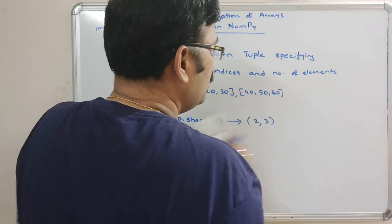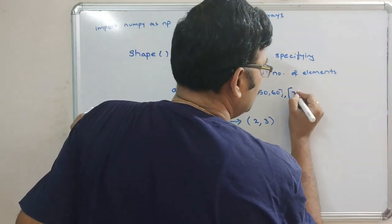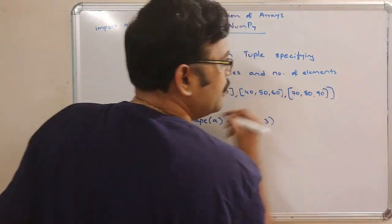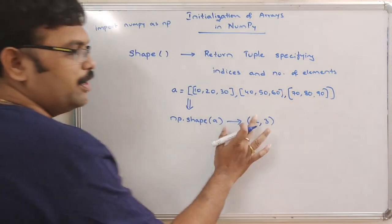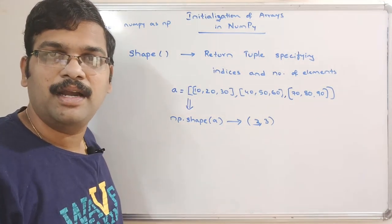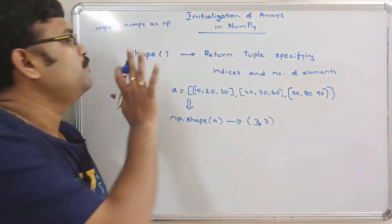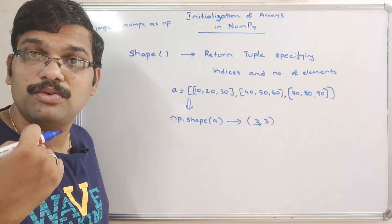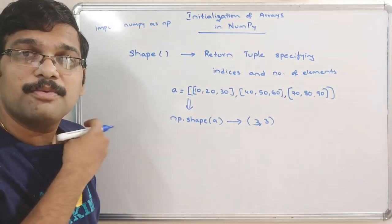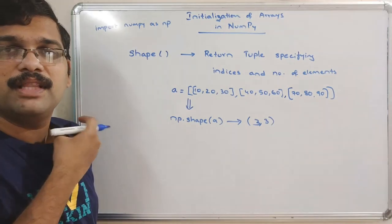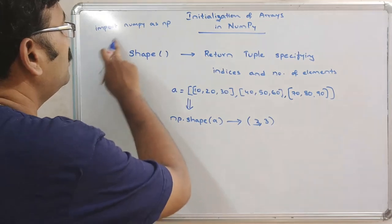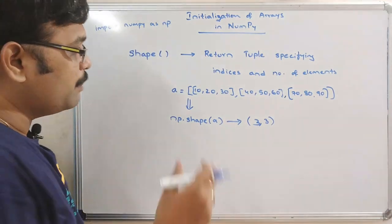If you have one more row like [70, 80, 90], you will get three indices with three elements each — three indices with three elements. So in order to know the shape of a particular array, we use the shape function by calling np.shape().